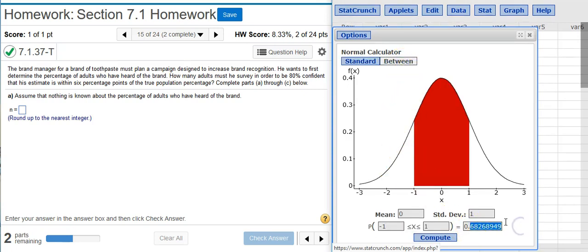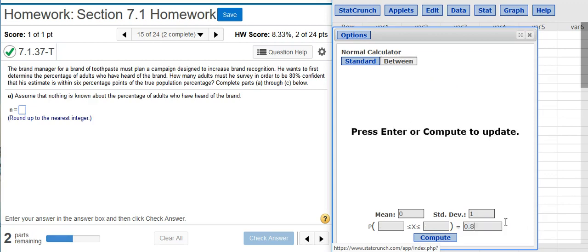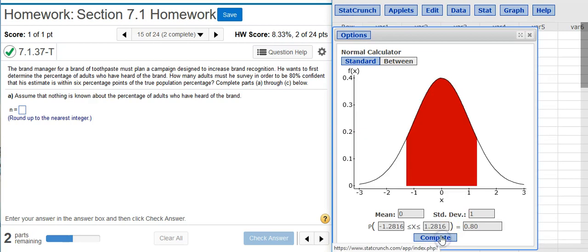then here in the percentage I'm just going to put in I want 80% confidence, so that's 80%, hit compute. There are my two critical values. I really only need the positive one, 1.28, so that's what I'm going to use. Now that I found the critical value, I can actually substitute into my equation.